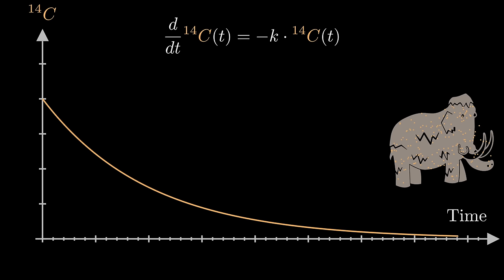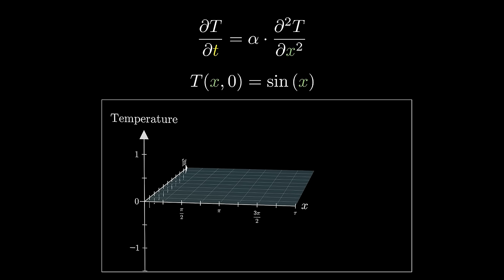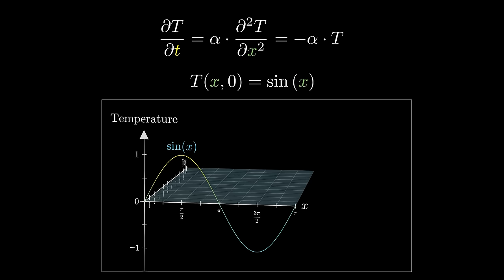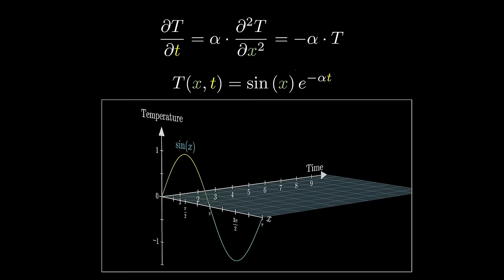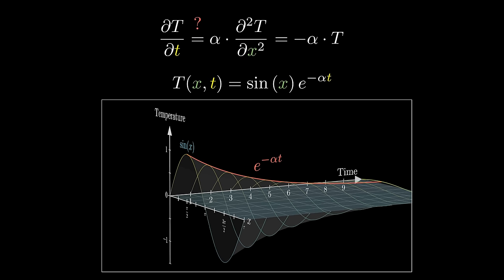If the rate at which the count of carbon-14 atoms in an old bone changes is always equal to some negative constant times that count itself, then over time that number will look approximately like e to that negative constant times t times whatever the initial count was. So when you look at our heat equation, and you know that for a sine wave, the right-hand side is going to be negative alpha times the temperature function itself, hopefully it wouldn't be too surprising to propose that the solution is to scale down by a factor of e to the negative alpha t.